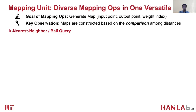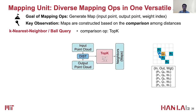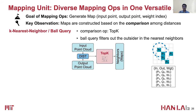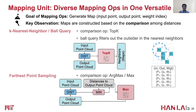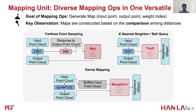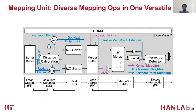Similarly, we convert the k-nearest neighbor into a top-k operation of the distances. Ball query is just a further filter of points outside the predefined radius. And farthest point sampling is simply converted to a max operation. Point Tech unifies and converts the mapping operations into max, top-k, and merge-sort — these point-cloud-agnostic ranking-based comparisons. Thus, we become able to efficiently support diverse mapping operations.